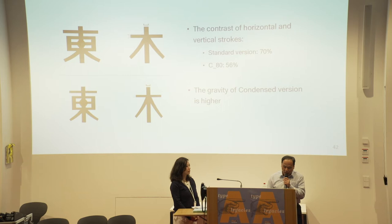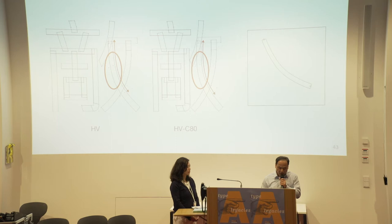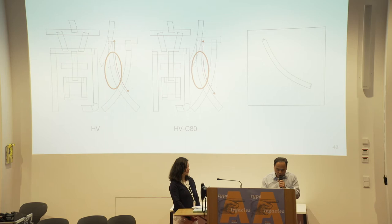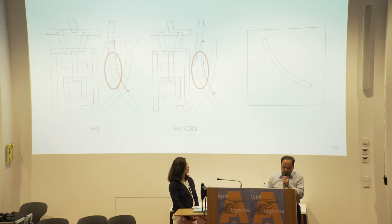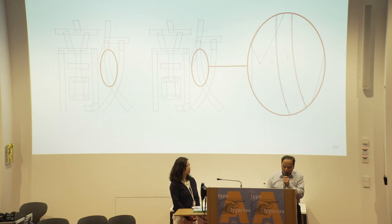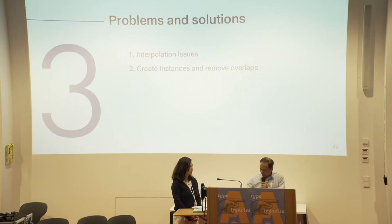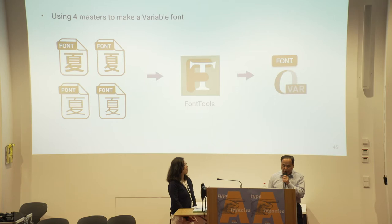To design a high-quality font, we have to take care of details. The strokes in the red circle are distorted due to the process of condensing. We have to reprogram the strokes to improve the curvature. The left side shows the distorted curvature and the right side shows it fixed. After developing and checking compatibility, we can generate a variable font.